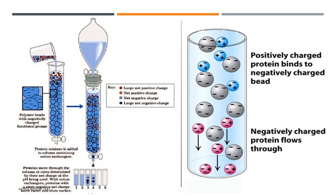You can see in the diagram how the cationic and anionic exchangers — shown in blue and purple — help the sample to separate out.